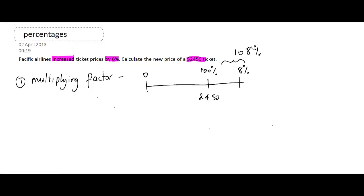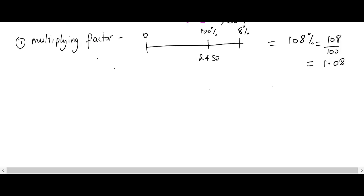So, once I find this number, what I'm going to do is change that into a decimal number by doing 108% is the same thing as 108 over 100, because the percent means out of 100, and 108 divided by 100 is 1.08. And this number is very important, it's called the multiplying factor.